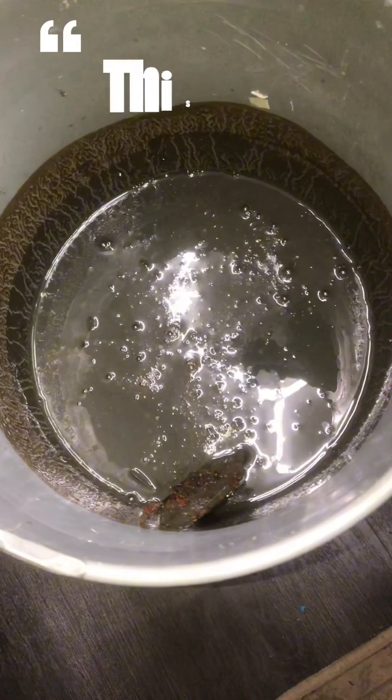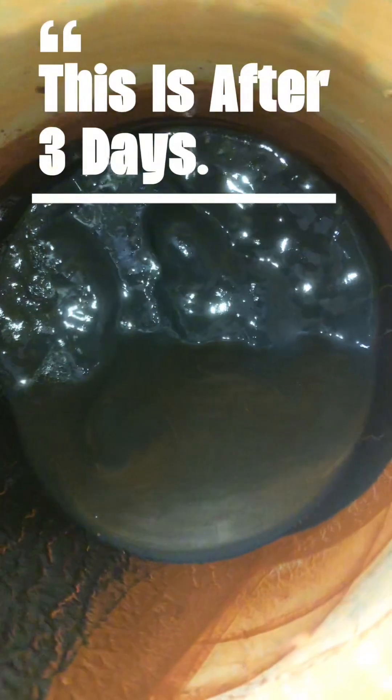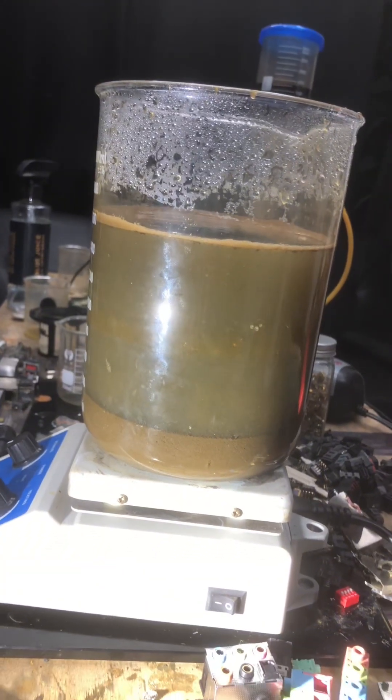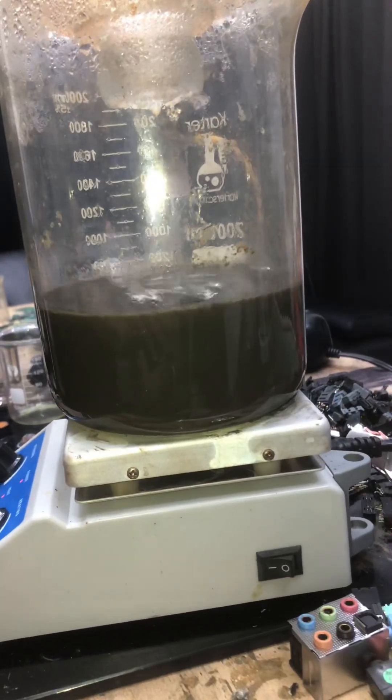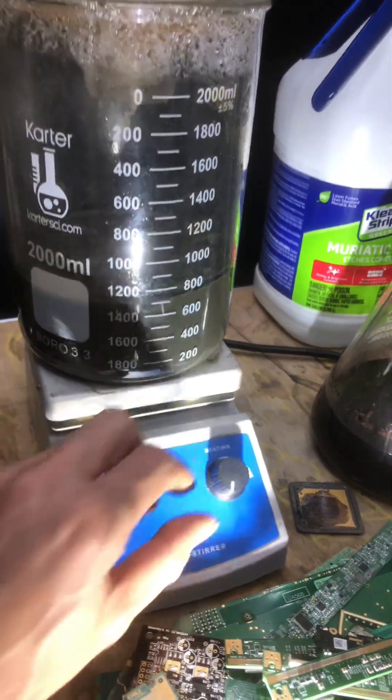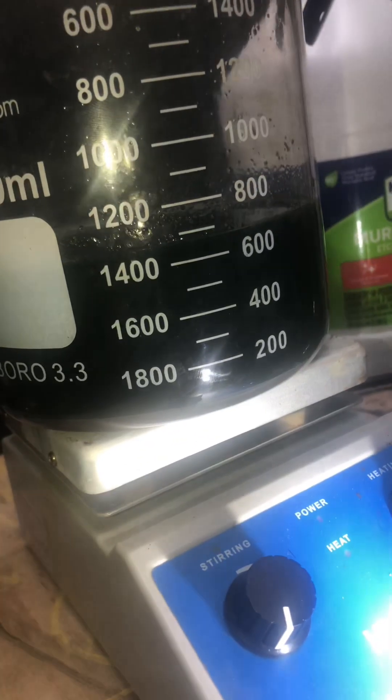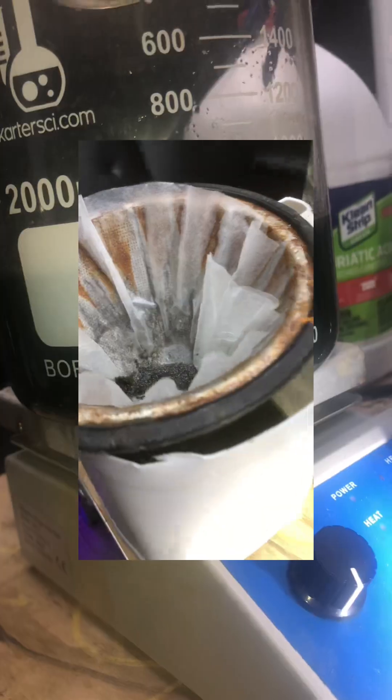Next, transfer into a beaker or jar, then pour off excess water. Add some muriatic acid and your solution should turn dark blue-green. This is because of the copper and other metals in your mix. Filter off excess muriatic acid and rinse with more muriatic acid until your solution turns yellow.